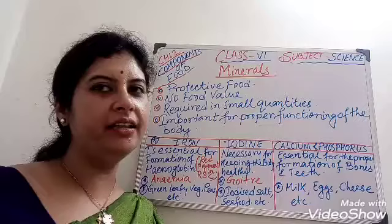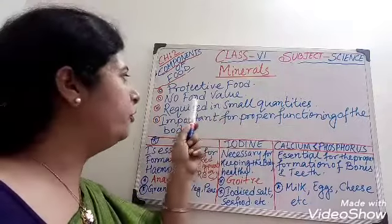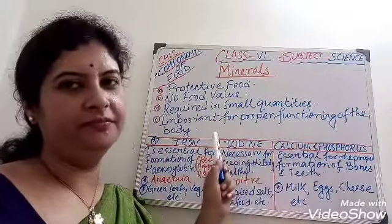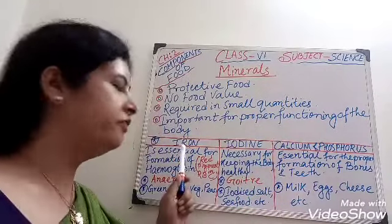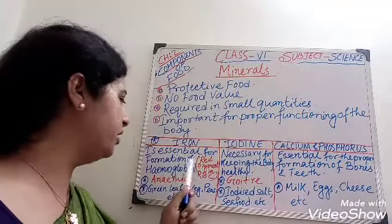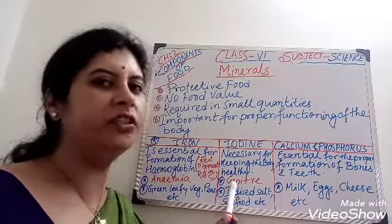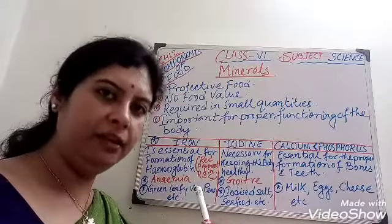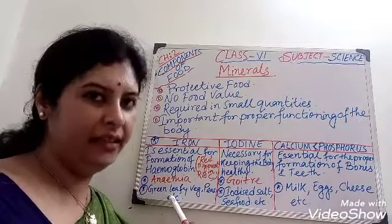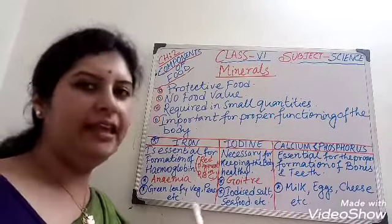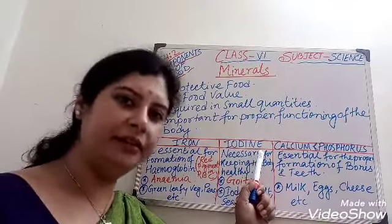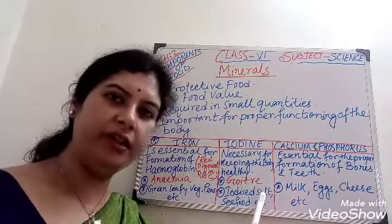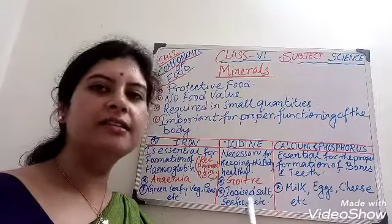Minerals, like vitamins, are also protective food — they have no direct food value, are required in small quantities, and are important for proper functioning of the body. Iron is essential for the formation of hemoglobin, the red pigment in our red blood cells. Deficiency of iron causes anemia. Iron is found in green leafy vegetables, peas, etc. Iodine is necessary for keeping the body healthy; its deficiency causes goiter. It is present in iodized salt, seafood, etc.